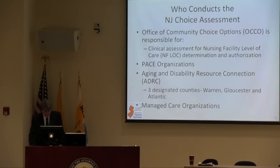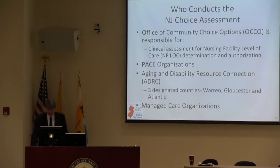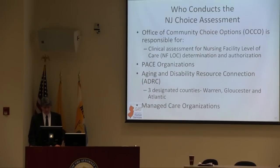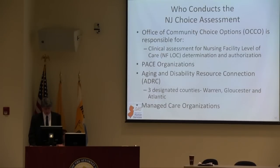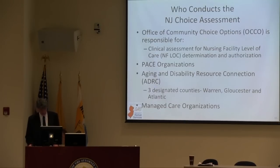In the Division of Aging Services, we have the Office of Community Choice Options, or OCO, which is responsible for clinical assessment for nursing facility level of care determination and authorization. This is a pre-admission screening. The NJ Choice is also used for case organizations, for aging and disability resource connections, re-designated counties, and by managed care organizations.